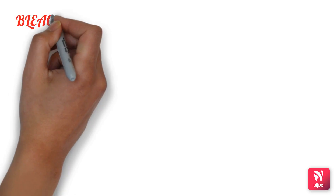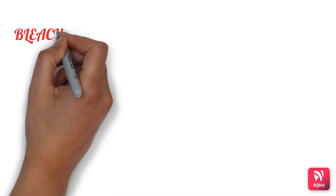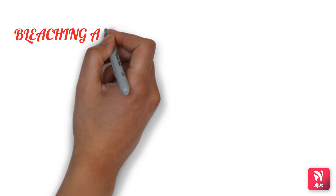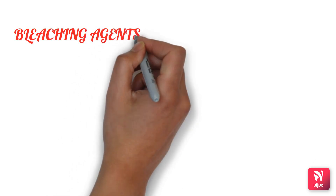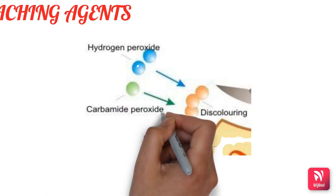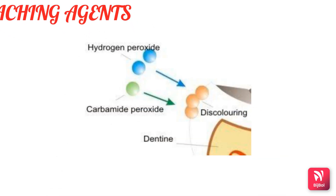The lightening of this discoloration is achieved through the application of chemical agents to oxidize the organic pigmentation in the tooth. The bleaching agents used in dentistry are namely hydrogen peroxide, sodium perborate, and carbamide peroxide.